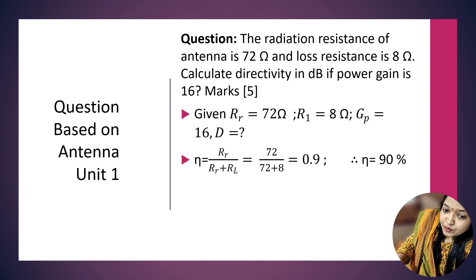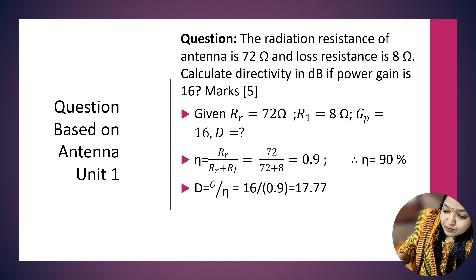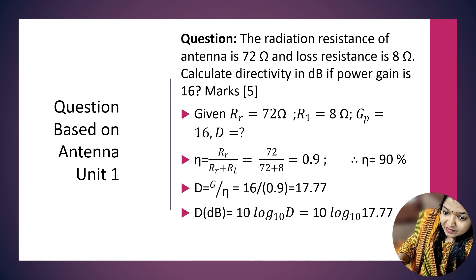The formula for efficiency is η = RR/(RR + RL) = 0.9. Efficiency is 90%.